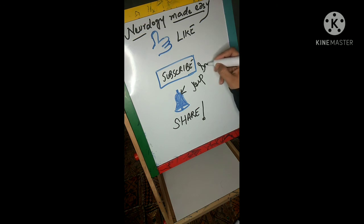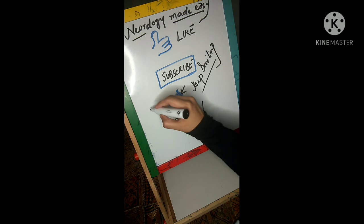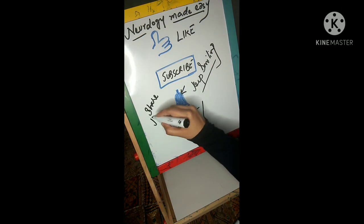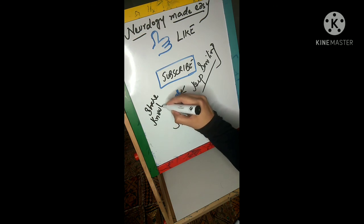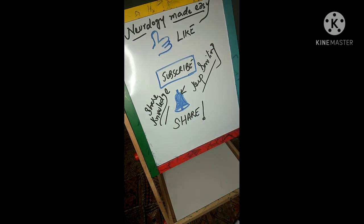Growth hormone is responsible for growth. TSH causes release of T3 and T4, which have various functions. Cortisol is released from the adrenal cortex due to the effect of ACTH. So this is all about these tracts — hopefully you will understand it. Take care.